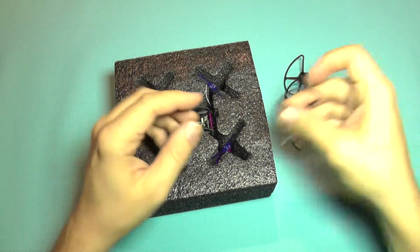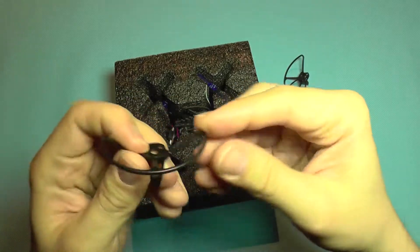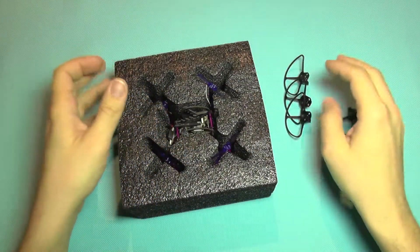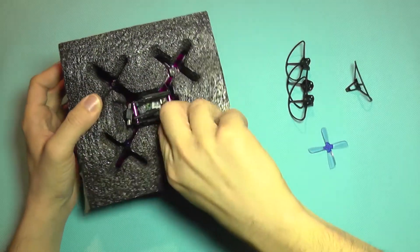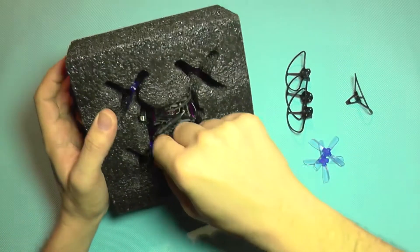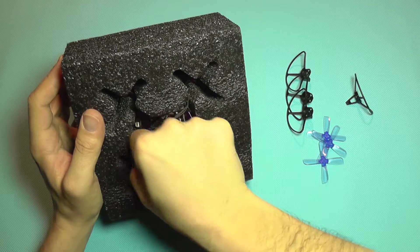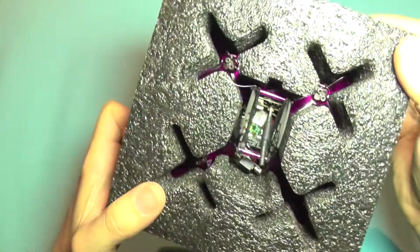So it comes with propeller guards which are made from a nice kind of plastic. They have a lot of flexibility although they are very light, so this should be good for starting with this quadcopter. It comes with a spare set of propellers and another set already installed.